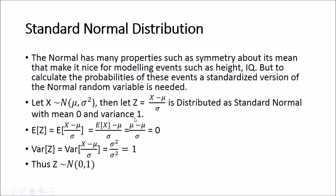How do we go about showing that? We know Z equals (X minus mu) over sigma. Taking the expected value of Z: E[Z] = E[(X minus mu) / sigma] = (E[X] minus mu) / sigma, since sigma is a constant, and we know this resolves to zero. The variance of Z equals Var[(X minus mu) / sigma squared], and since sigma is a constant in a variance operator, sigma must be taken out and squared.